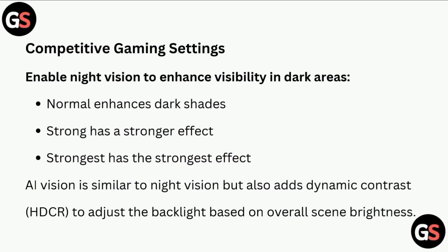Competitive Gaming Settings. Enable Night Vision to enhance visibility in dark areas. Normal enhances dark shades, Strong has a stronger effect, and Strongest has the strongest effect. AI Vision is similar to Night Vision but also adds dynamic contrast to adjust the backlight based on overall scene brightness.